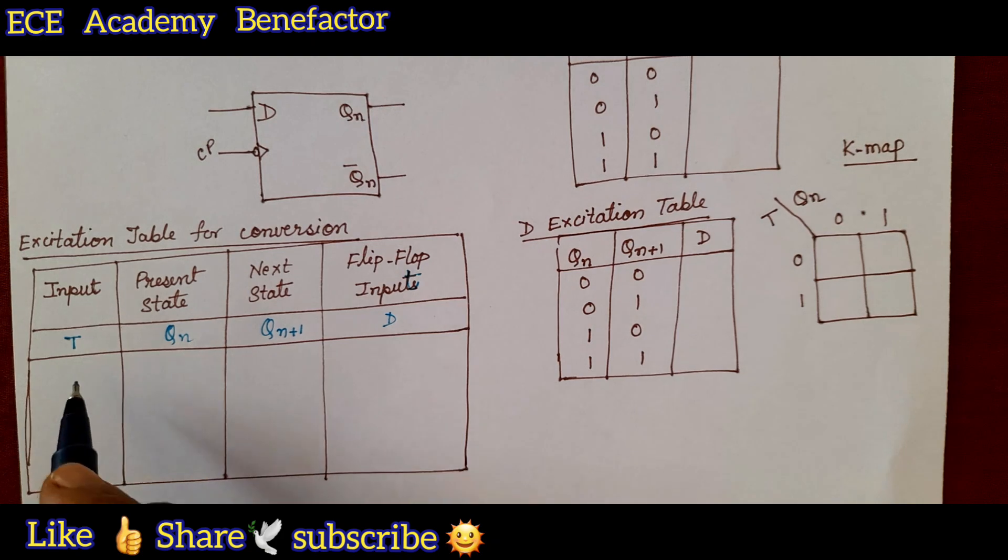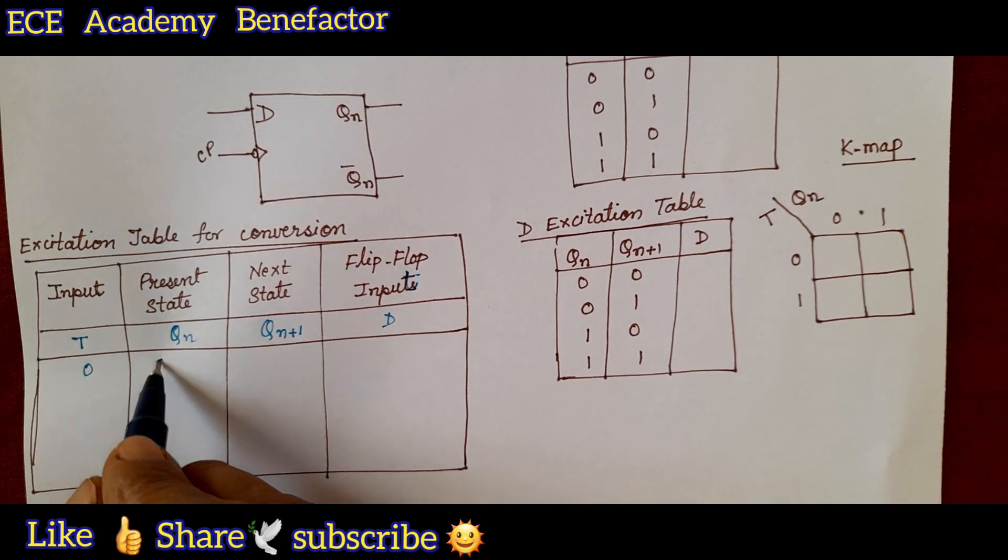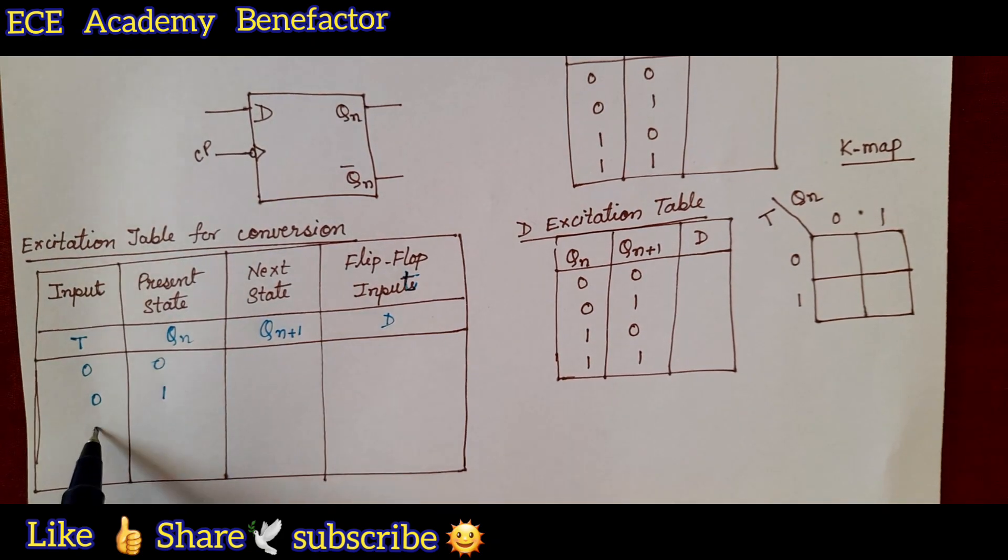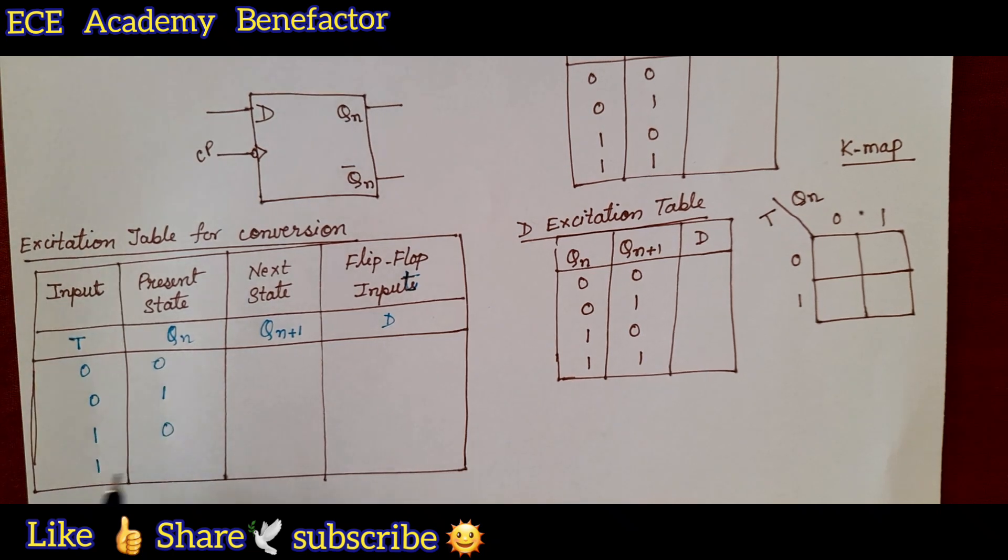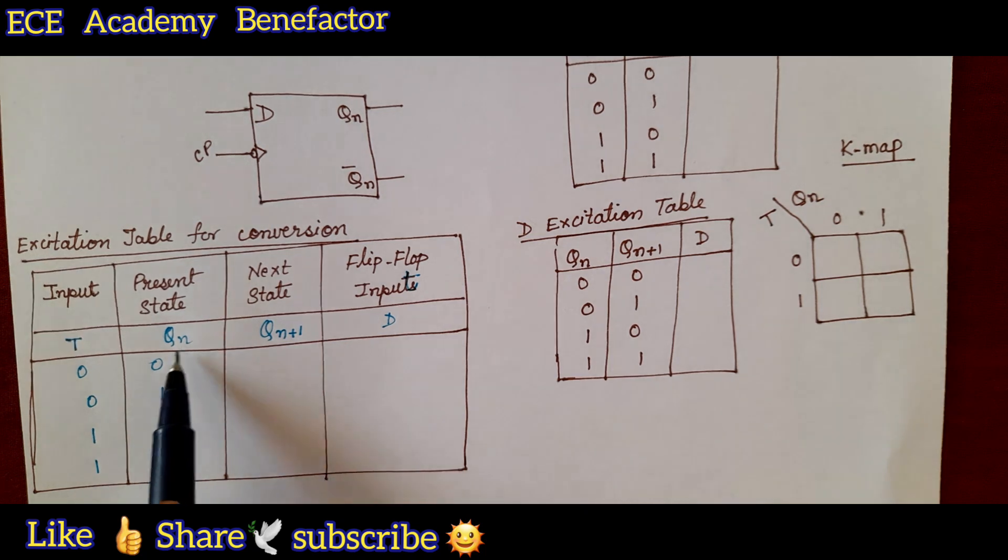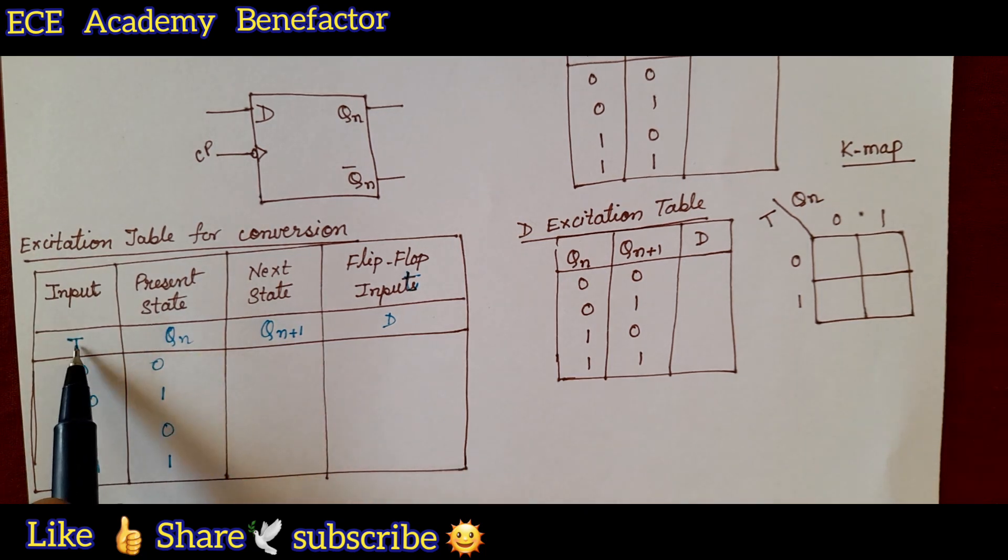It is written as 0 0, 0 1, 1 0, 1 1. This is the binary combination of T and Q n.